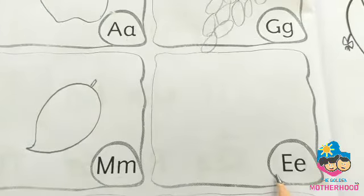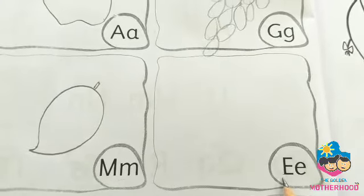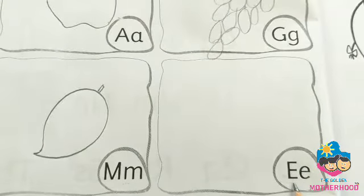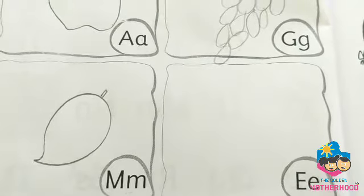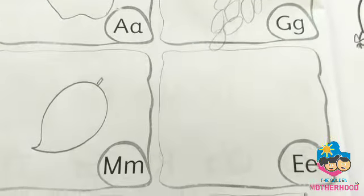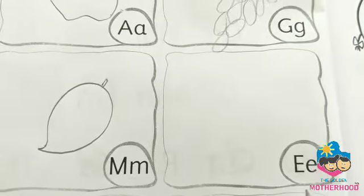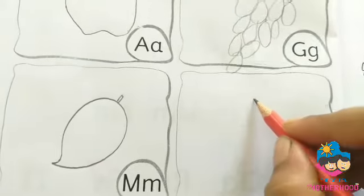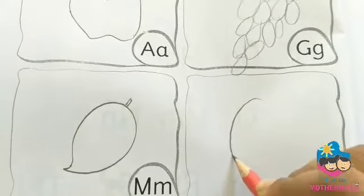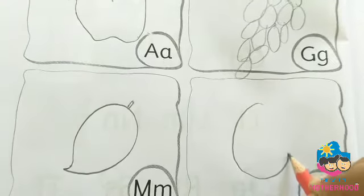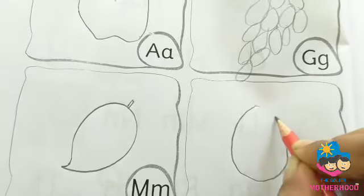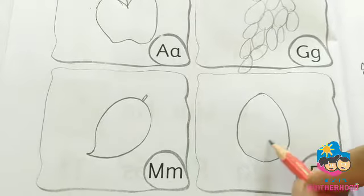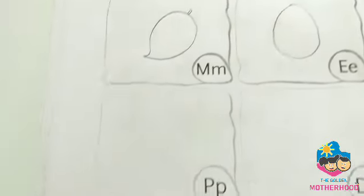This is the letter E. E for Elephant. E for Engine. E for Egg — you can draw anything you like. I will draw the picture of an Egg. This is the letter E for Egg.